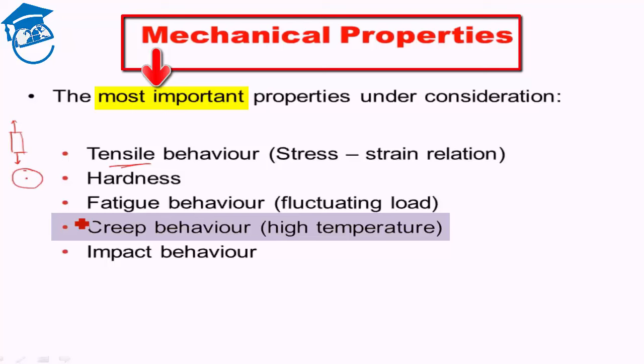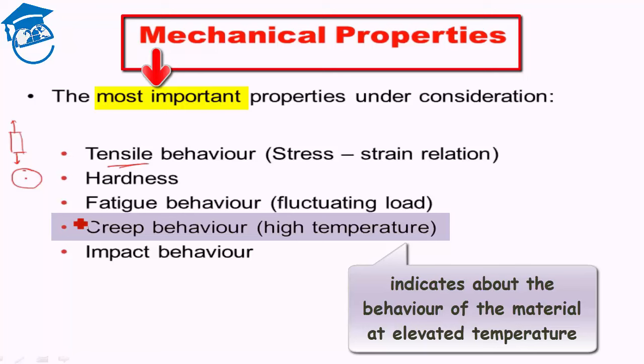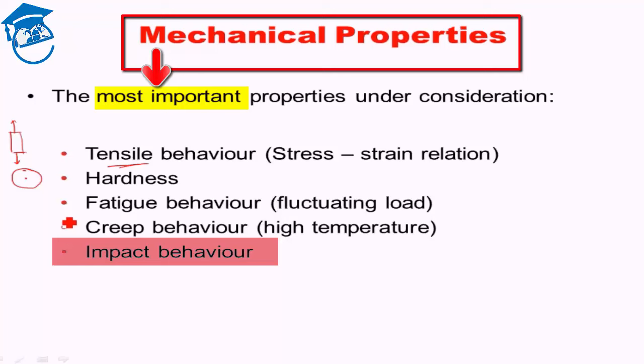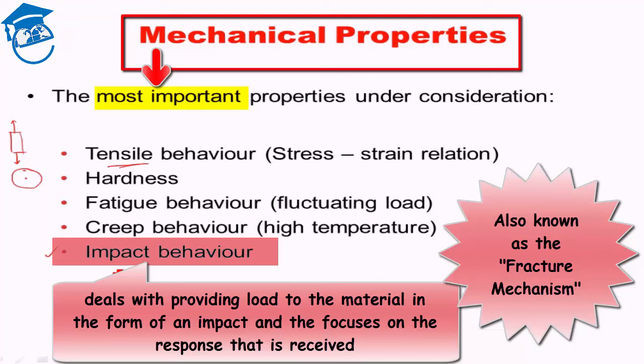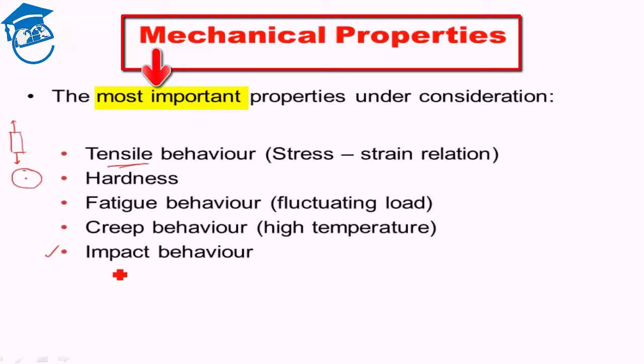Creep behavior is basically the property of a material at elevated temperature. At higher temperatures, material properties vary from those at room temperature, so what exactly is the behavior at elevated temperature is studied under creep. Impact behavior is when a load is provided in the form of an impact — the response of the material under impact is what is studied, and this can also be thought of as the fracture mechanism of a particular material.